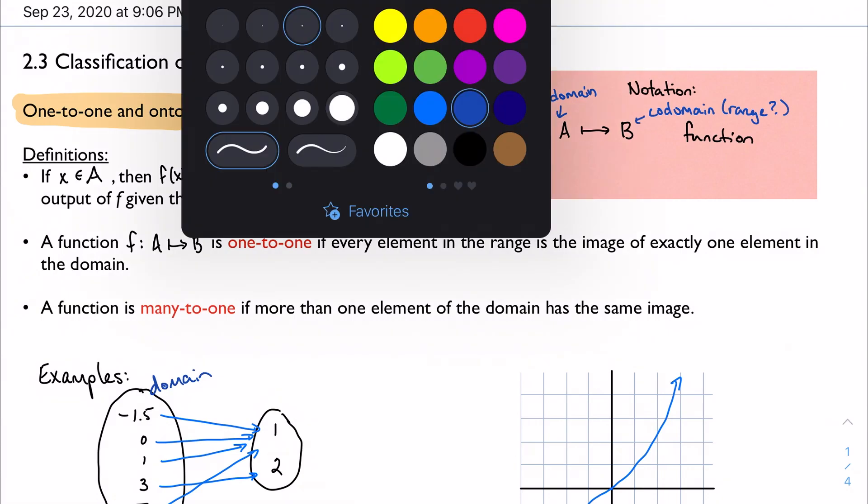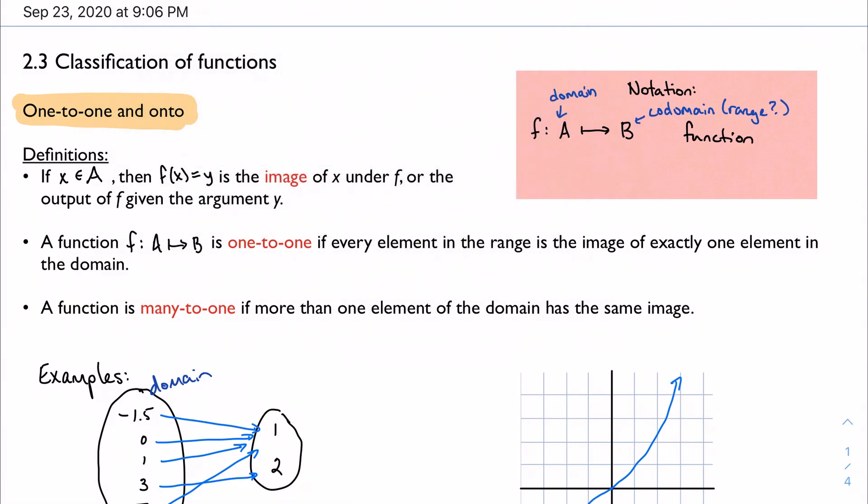What this notation is doing is saying I'm going to take all the elements in A, in the set A, and send them to all the elements or some of the elements in the set B. For example, maybe I have my function that sends all the real numbers to all the real numbers, or maybe all the real numbers to just the integers if I want to make sure these are distinct.